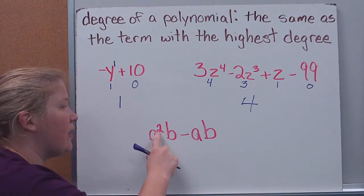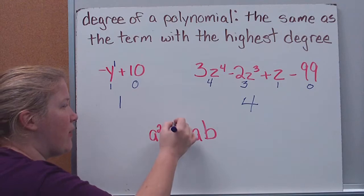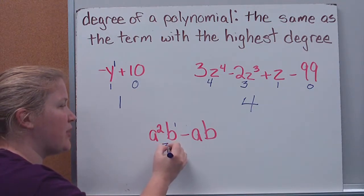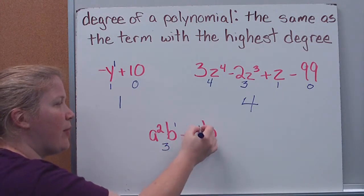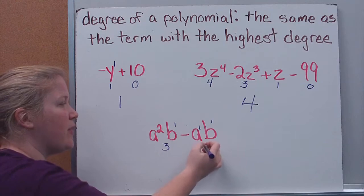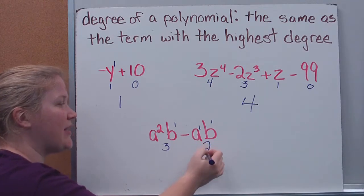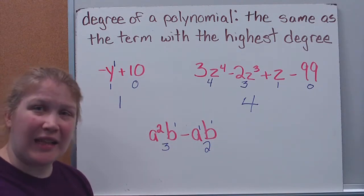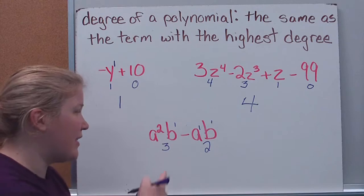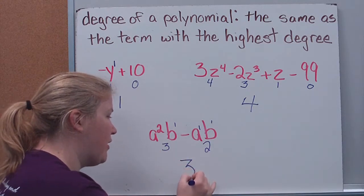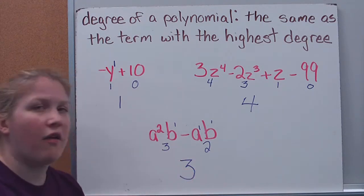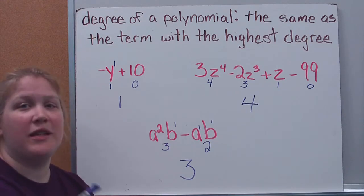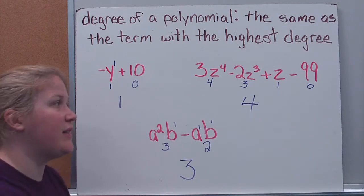Here I've got a squared b — remember the implied 1 on b — so this term has a degree of 3. This other term has implied 1s as well, giving it a degree of 2. So my polynomial has a degree of 3. The degree of the polynomial is the degree of the highest term.